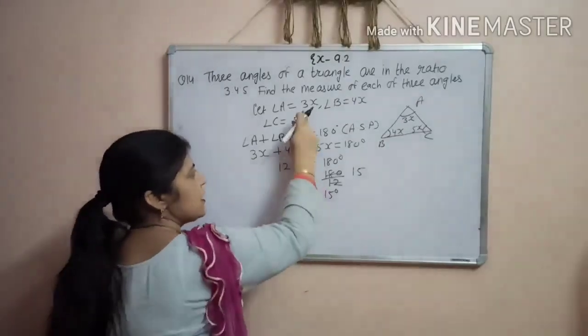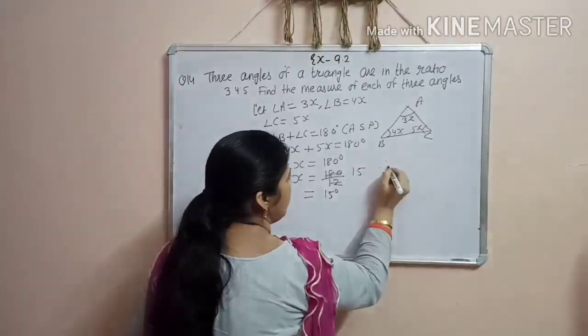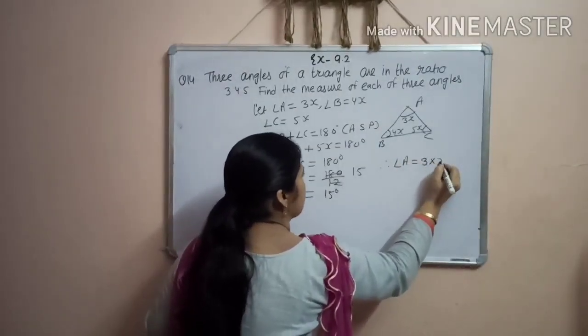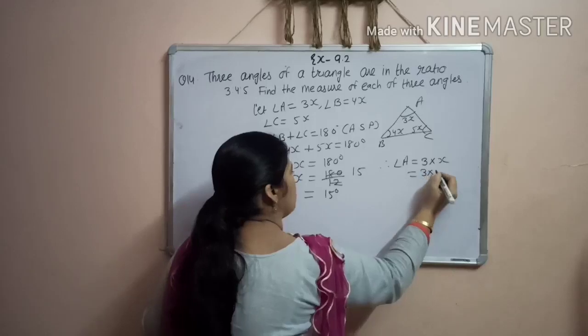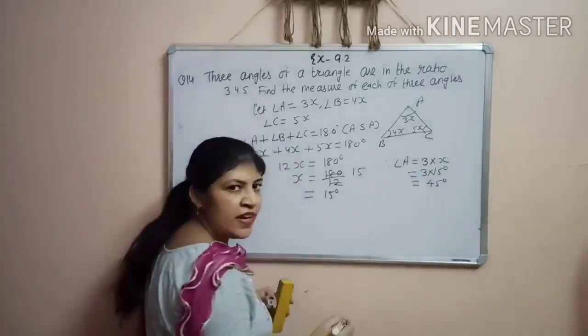Now, put this value of x in each angle. You can find each angle. Now, therefore, angle A is 3 into x, 3 into 15 degree. That is 45 degree.